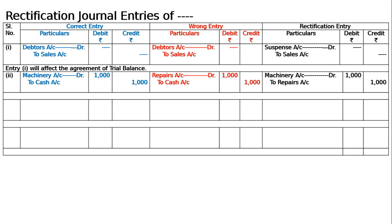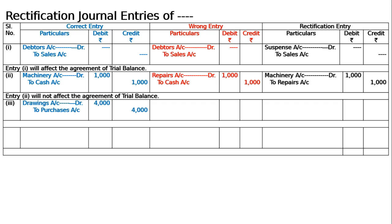The narration will be: installation charges paid for machinery charged to repairs account, now rectified. The third one is: goods costing 4000 taken by the proprietor for personal use have been debited to debtors account. The correct entry is drawings to purchases. The journal entry for the third one: drawings account debited to purchases account 4000 — goods taken by the proprietor for private use.